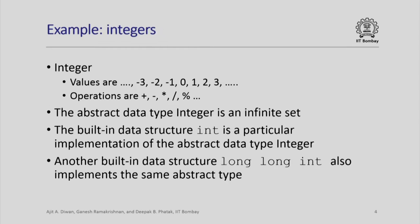As an example, the integer type — informally, integers are all numbers 0, 1, 2, 3 and so on and their negations, with operations like plus, minus, star, and so on. The abstract data type integer is actually an infinite set. But the built-in data type called int is a particular implementation of the abstract data type integer — it cannot represent all possible integers. As you know, int is typically 32-bit or 64-bit, so only a finite set of integers can be represented by the int variable.